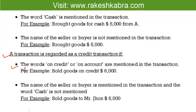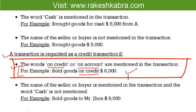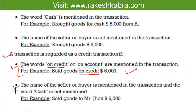Now let's see when we consider a transaction as a credit transaction. The first rule: if the words 'on credit' or 'on account' are mentioned in the transaction, then it will be considered a credit transaction. For example, 'Sold goods on credit $6,000' — the word 'on credit' is used, so it is a credit transaction and the payment is pending.